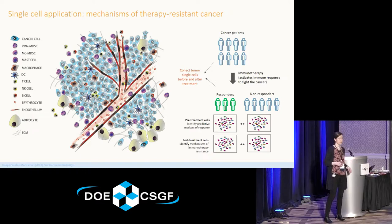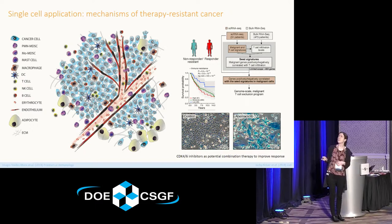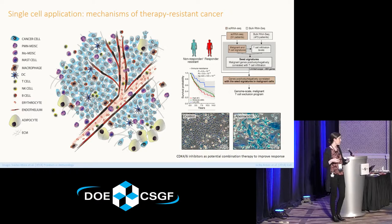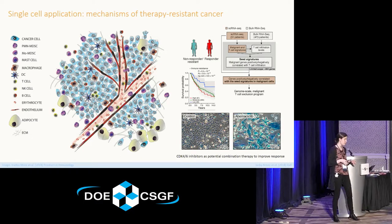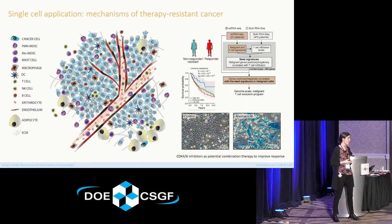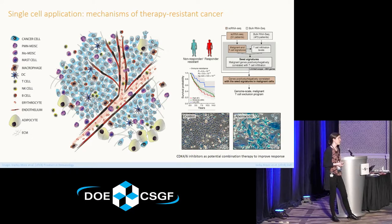This is already being done. One example from melanoma found, using single-cell sequencing, that within the cancer cells there's a gene expression signature correlated with excluding T cells from entering the tumor. Having T cells invade into the tumor seems to be very important for immunotherapy's success. Based on other biological knowledge, they saw that this gene expression profile might be reversible using an existing drug. They tested this in mouse in vitro and found it does seem to improve T cell infiltration into the tumor — a very exciting example of how single-cell sequencing can help figure out new combination therapies.